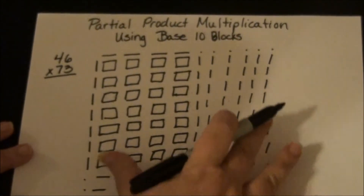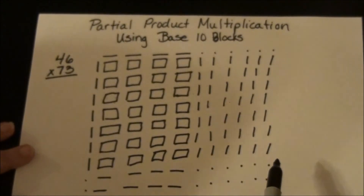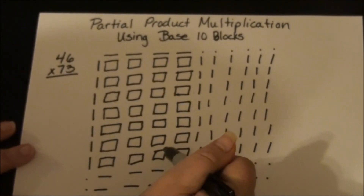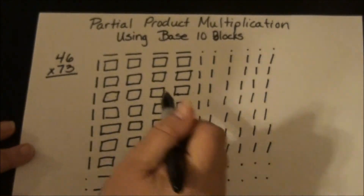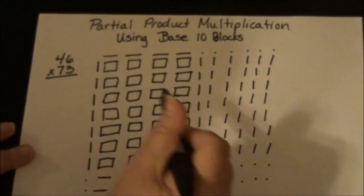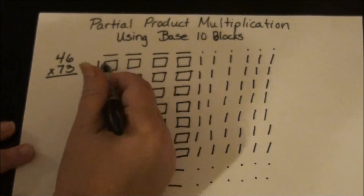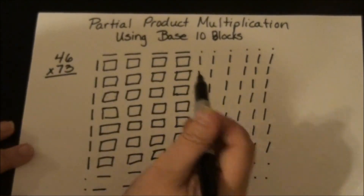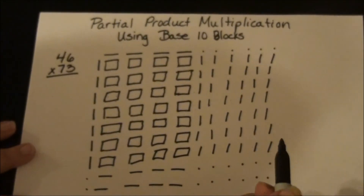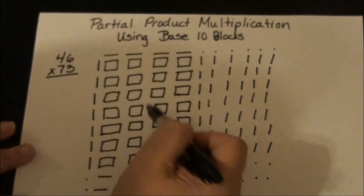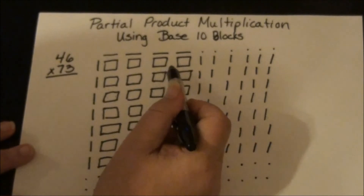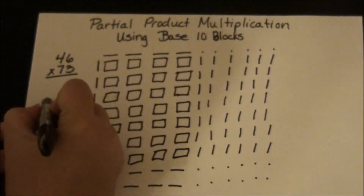Now all we have to do is figure out what this equals. There are different ways you can do this: you can count the individual boxes and multiply by 100, count by hundreds, or circle groups of 10 to find 1,000. My preferred way is to figure out how many I have by saying 7 times 4, which is 28, and 28 times 100 is 2,800.